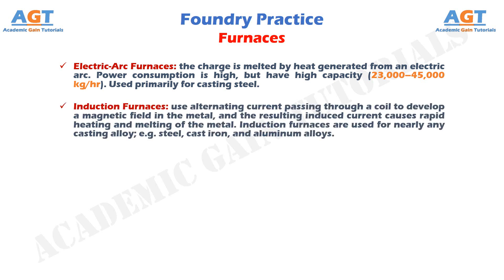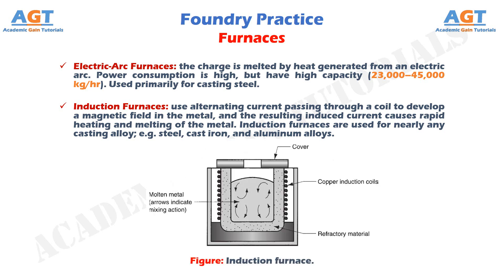Induction furnaces use alternating current passing through a coil to develop a magnetic field in the metal, and the resulting induced current causes rapid heating and melting of the metal. Induction furnaces are used for nearly any casting alloy, for example steel, cast iron, and aluminum alloys. In this figure we can see an induction furnace.